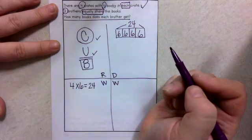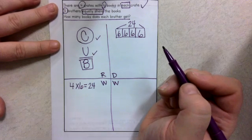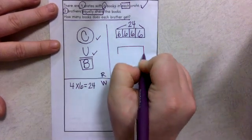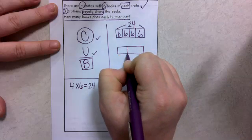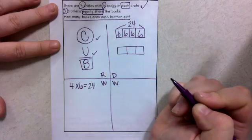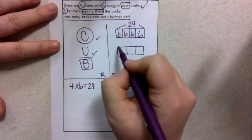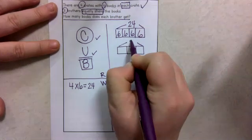Okay, is there anything we can draw that goes along with that? Well, I could draw a bar model for my three brothers. So brother one, brother two, and brother three. And they're going to equally share the books. How many books are they going to equally share? They're going to equally share 24 books.